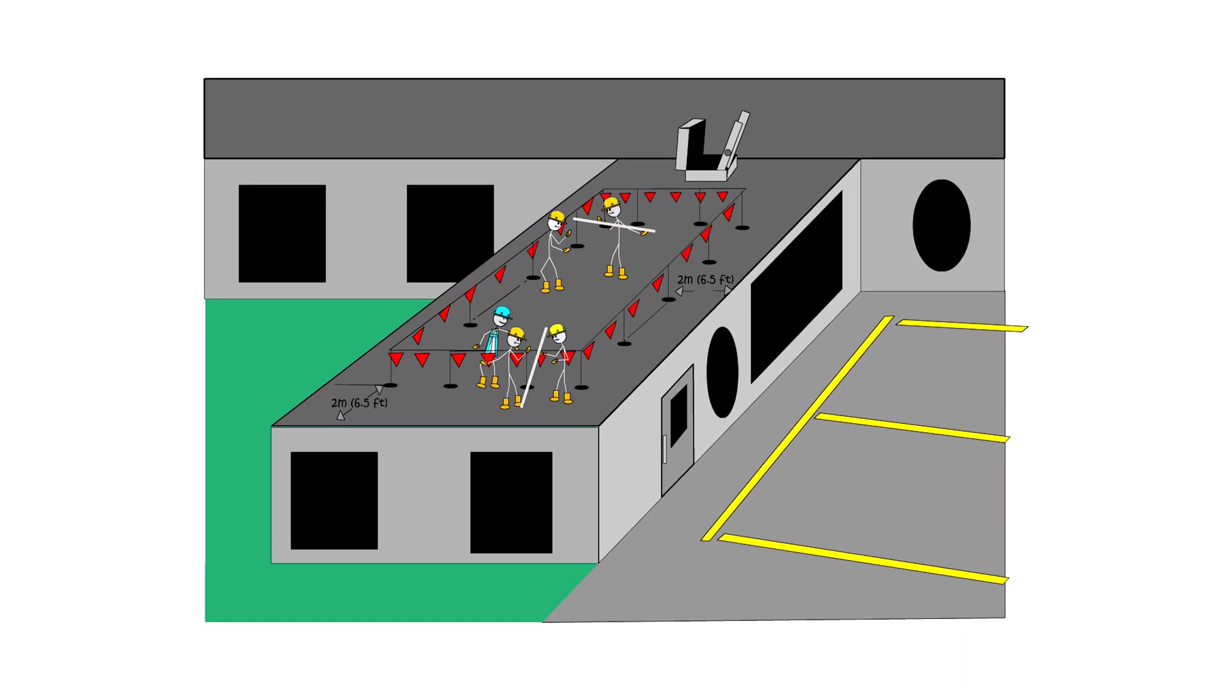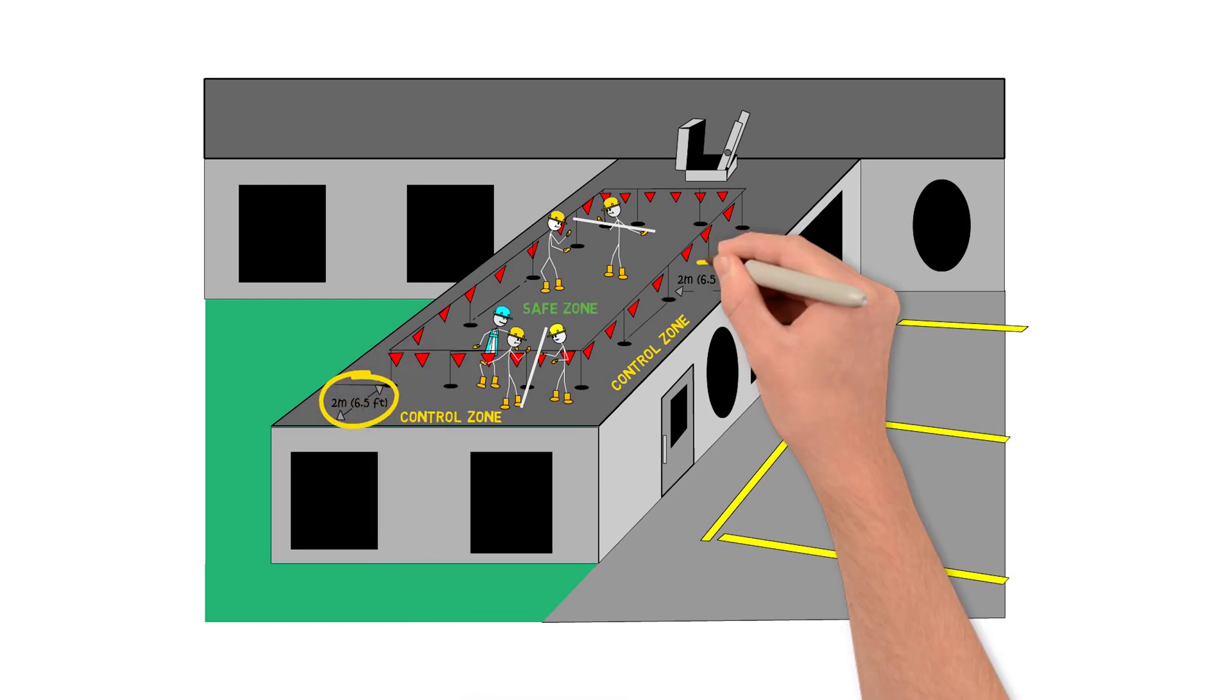But what is a control zone? It's an area between an unguarded edge of a building or structure and a safe distance of at least two meters or six and a half feet.